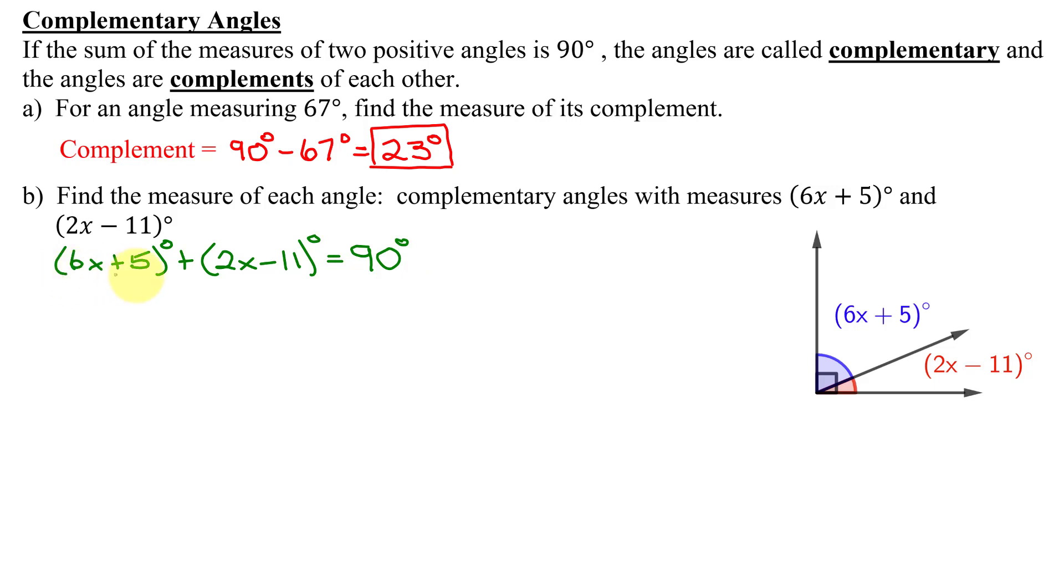So do I need these parentheses? No, I just have plus 1 in front of each of the parentheses. So I don't need to write them. So I have 6x plus 5 plus 2x minus 11 equals 90. Like terms on the left-hand side, 6x and 2x is 8x and 5 minus 11 is negative 6 equals 90. Now to isolate the 8x,